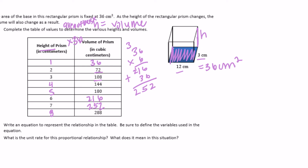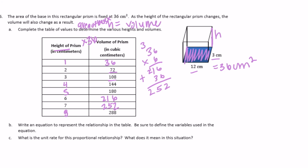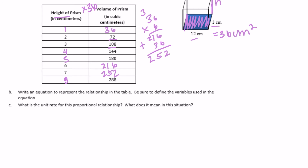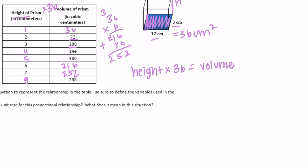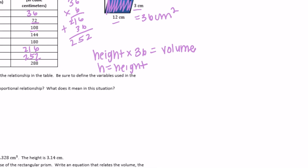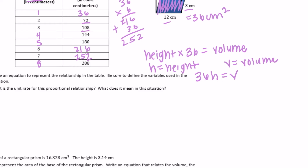Part b: write an equation to represent the relationship in the table. Define your variables. Let h equal the height and v equal the volume. Our equation is 36 times h equals v. That's our equation.